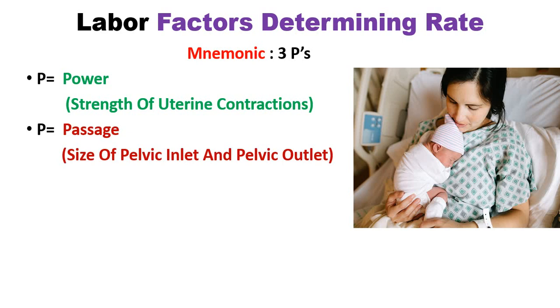The third P is Passenger. It means the fetus size. It depends upon the fetus size, and this also affects the labor and is a factor determining the rate of labor.